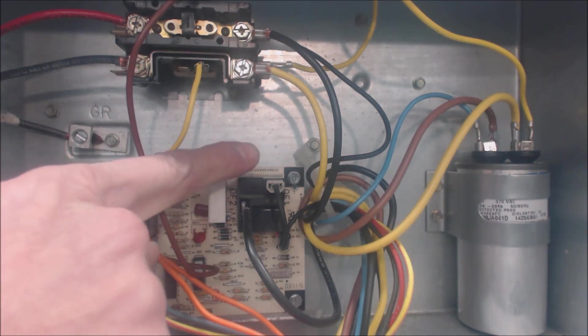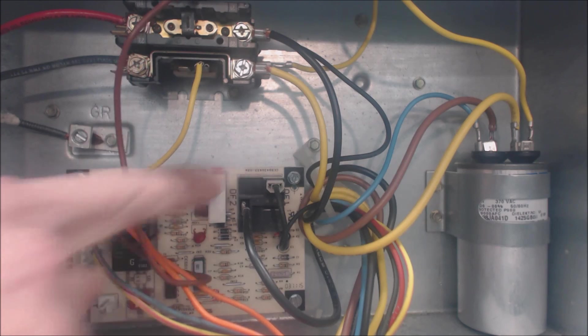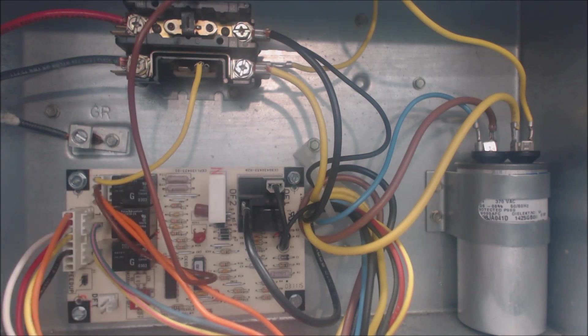One of the two is this fan relay that's mounted on the defrost control board. That's one of the items. The other one is a high pressure vapor switch that is down low and we'll discuss that in a little bit.